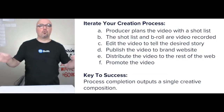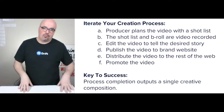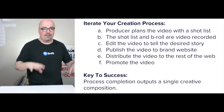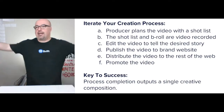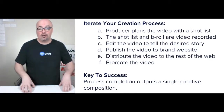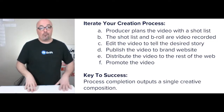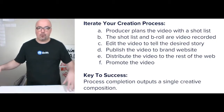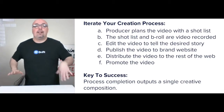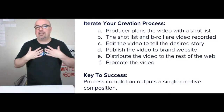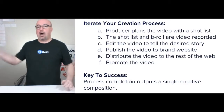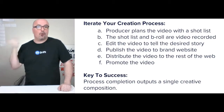As a general rule, you want to iterate your creation process. The producer plans the video with a shot list, records the shot list and b-roll, then edits the video — either the producer, an editor, or however you solve that problem — to tell the desired story. Then you publish the video to the brand website, distribute it to the rest of the web, and promote it to get more eyes on it. The key to success is that completing the process outputs a single creative composition put in front of the market for it to judge.